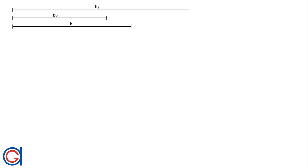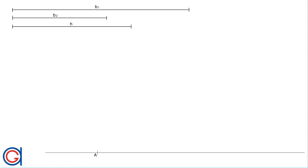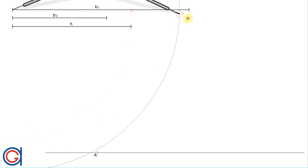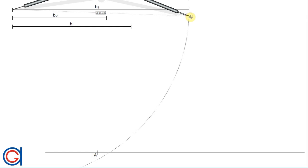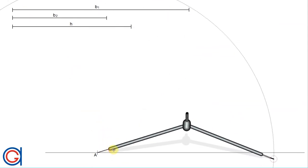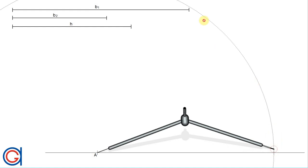The first step is to draw a horizontal line at the bottom of the screen and mark a point A on one side of it. Then, setting our compass to the length of the given base b1, we transport this base onto the horizontal line. Setting our compass on point A, we scribe an arc cutting the horizontal line at a new point B, so that AB equals the length of base b1.